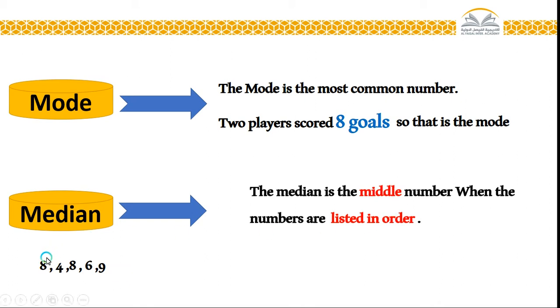Now, this is my list: eight, four, eight, six, nine. Is it ordered? Sure, no. I want to order it. From least to greatest or from greatest to least, anyway, no difference. I choose to make it from least to greatest.